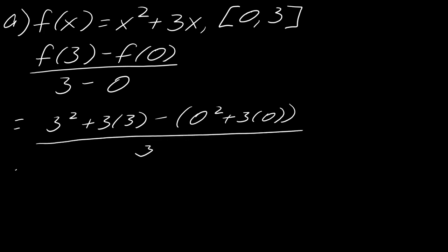And then in the bottom, this is all just 3. So this becomes 9 plus 9 divided by 3, so 18 divided by 3 is 6, and so that would be the average rate of change. That would also be the slope of the secant line from 0 to 3 if you were to graph that out.